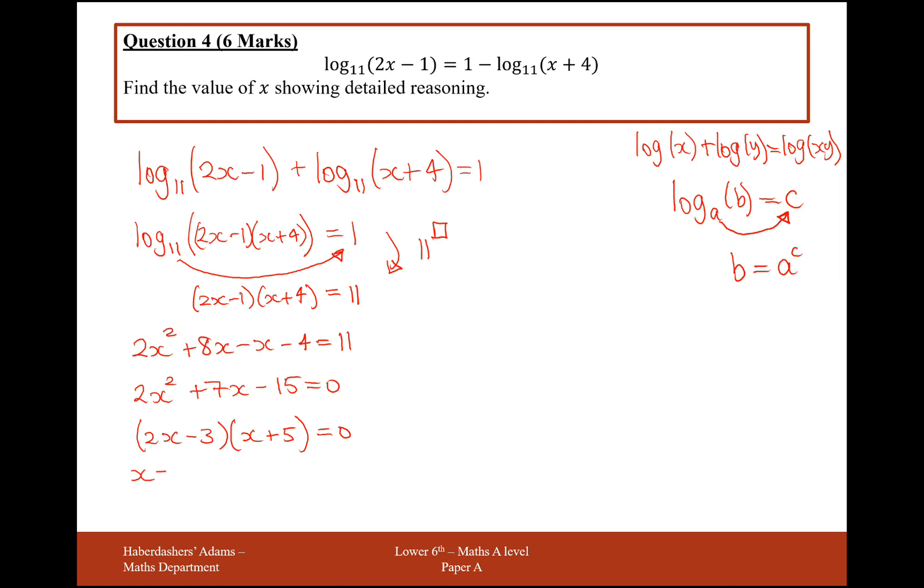So x equals 3/2 or x equals -5. However, we can never have log of a negative value, so we need to substitute these values back in to check if they're valid. If I put -5 into the original equation, I get log of -4, which I can't have. So x = -5 is not allowed, no solution.